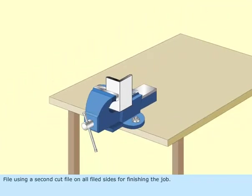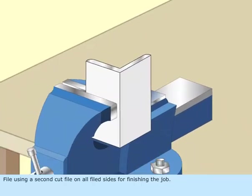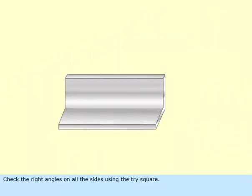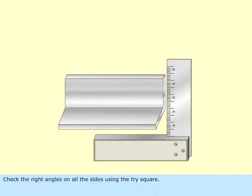File using a second cut file on all filed sides for finishing the job. Check the right angles on all the sides using the tri-square.